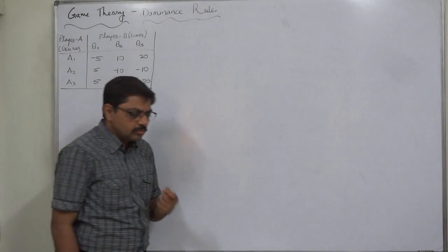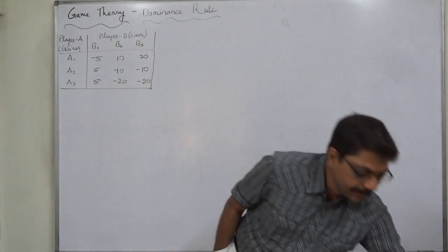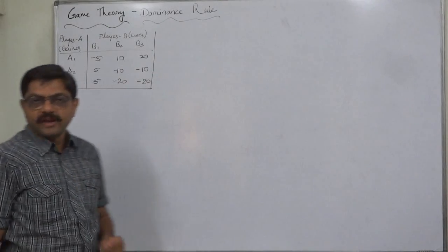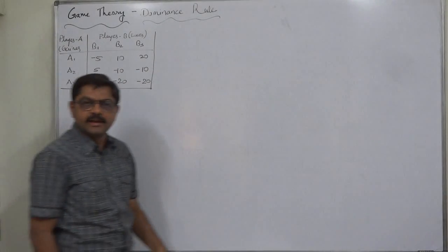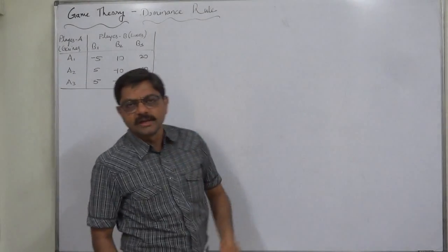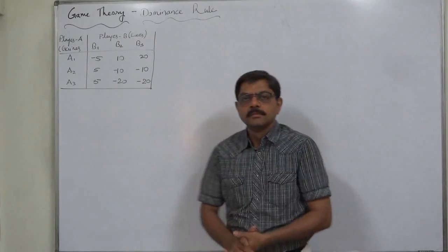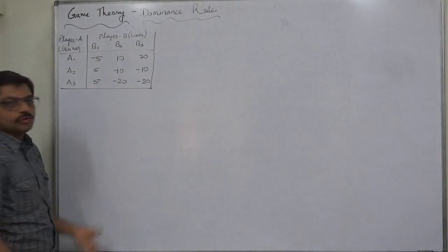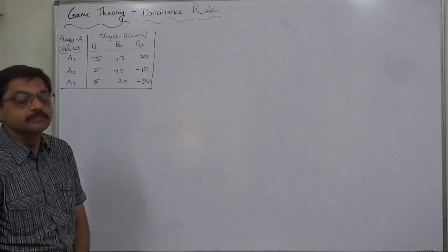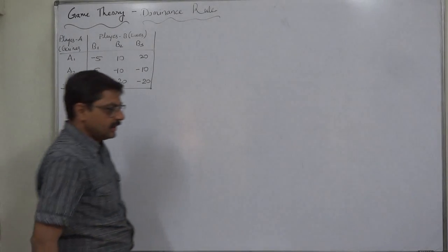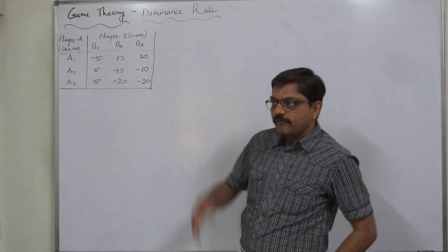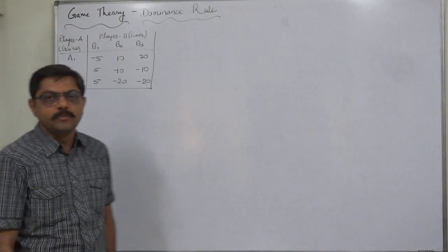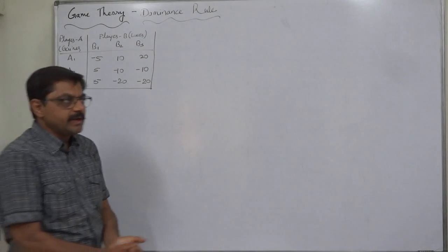So is there any way to reduce the order of a game? As a student, we want the game, if possible, to be reduced to a 2 by 2 game. Is it possible? Yes. And this procedure of reducing the order of the game is known as the Dominance Rule.